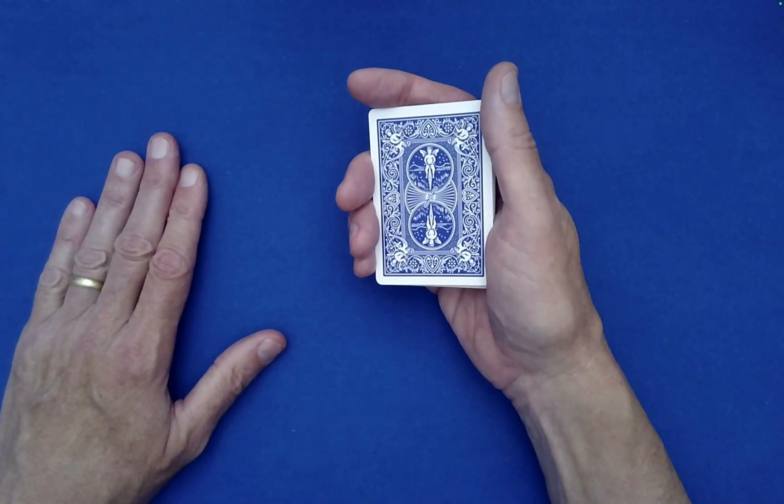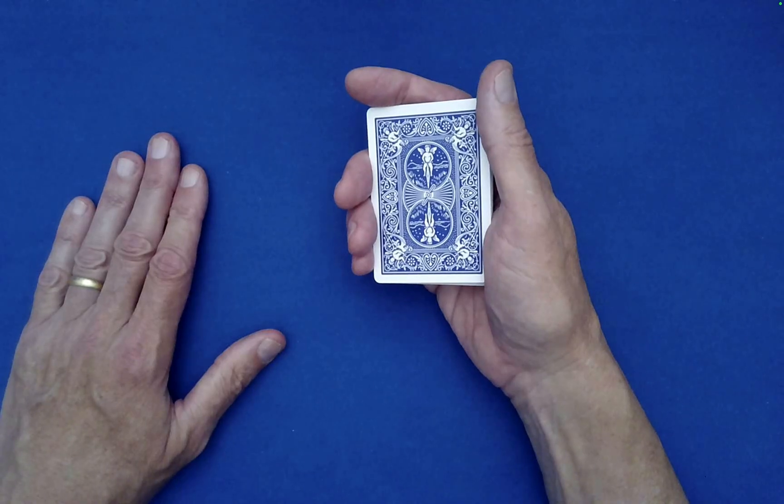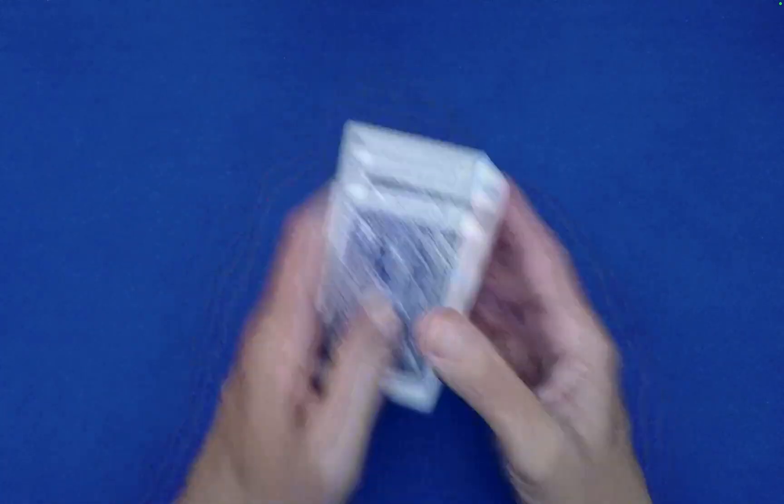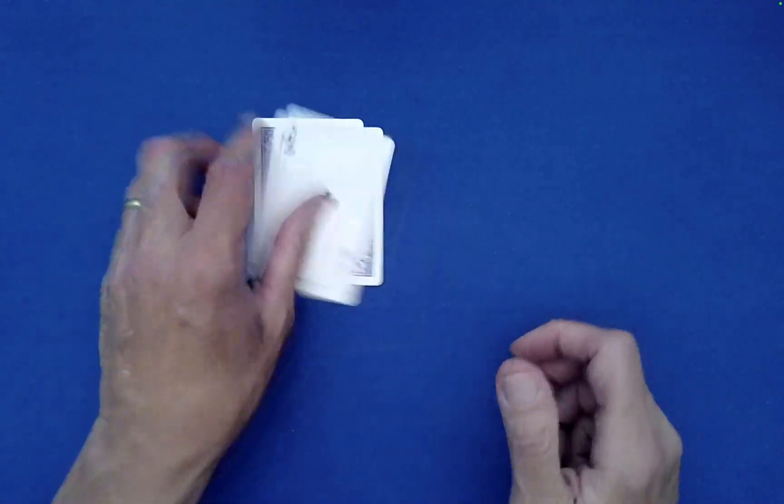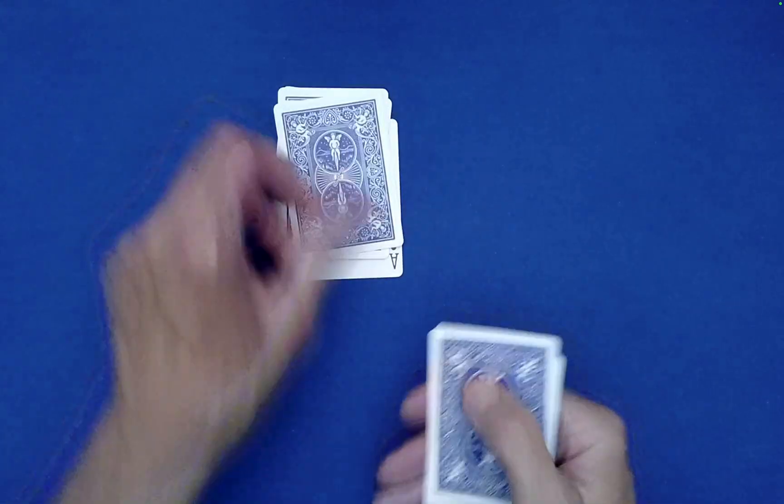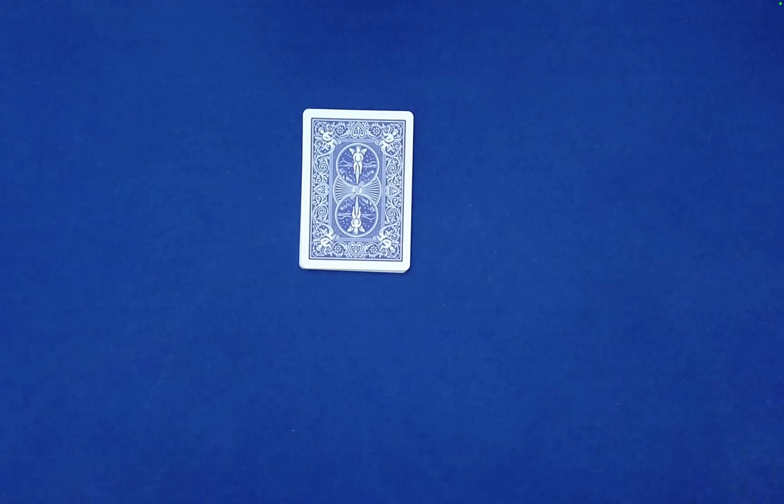Very good. So at this point what we're going to do is we're just going to spell out ace of clubs in the following way: A-C-E drop the rest on top, O-F drop the rest on top, C-L-U-B-S.